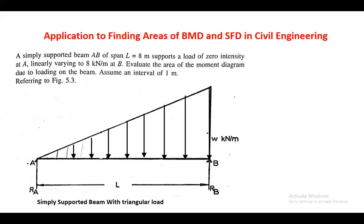The different types of loads on a simply supported beam include uniformly varying load, uniformly distributed load, point load, and moment. In this problem we need to apply the trapezoidal method. In an exam they will specifically mention which method to use. The procedure is: first calculate the reactions, then draw the bending moment diagram.